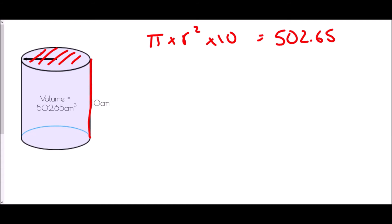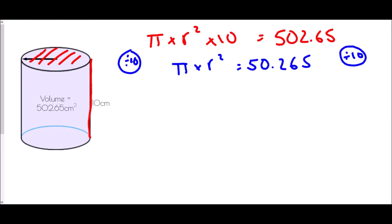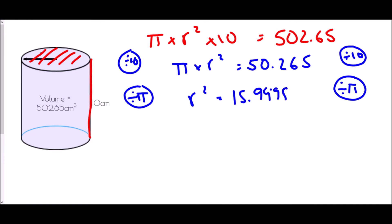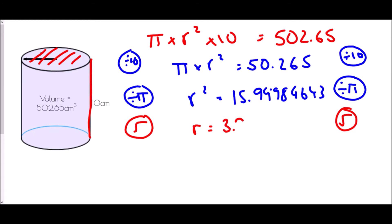I need to find r on its own. So I'm going to divide both sides by 10. If I do that, I get pi times r squared equals 50.265. Then I'm going to divide by pi. Typing 50.265 divided by pi into a calculator, I get r squared equals 15.99984643. How would I get r on its own? Well, this is r squared, so I need to take the square root. Square rooting both sides: the square root of 15.999 is 3.999980804. For all intents and purposes, r is 4 centimetres.